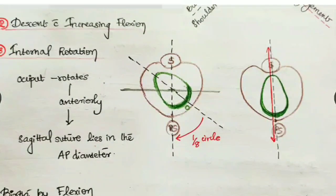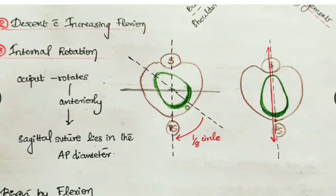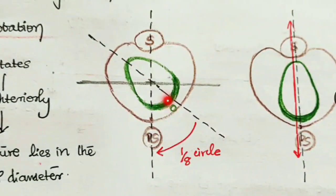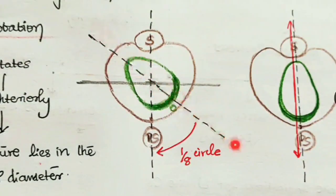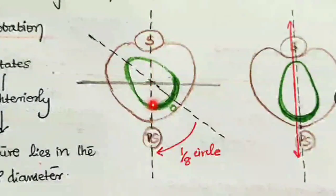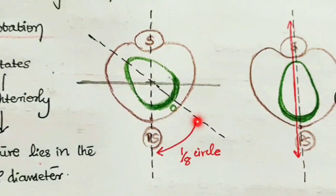Next is descent with increasing flexion. In breech, we keep the fetus head in maximum flexion - this makes delivery of the fetus head easier. Next is internal rotation: with the head in the left occipital anterior position, its axis is in the right oblique axis, and it has to align in the AP diameter - the longest diameter of the pelvis.